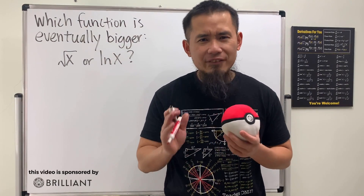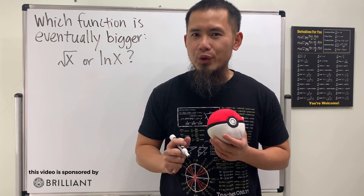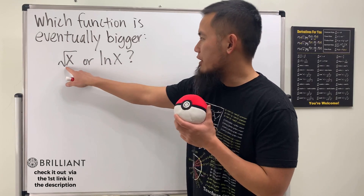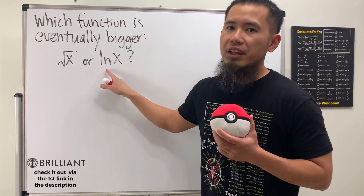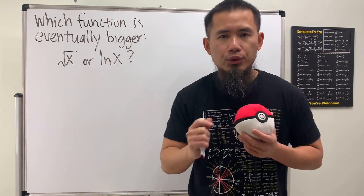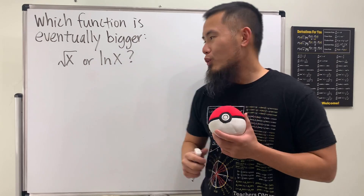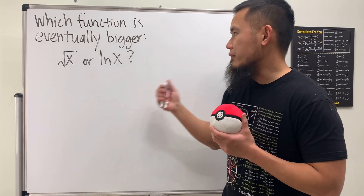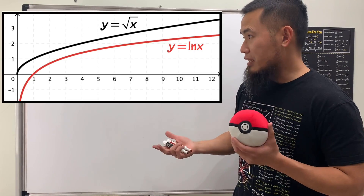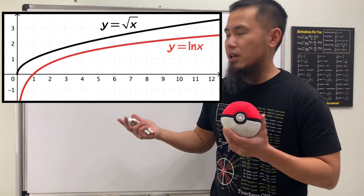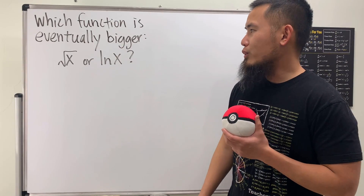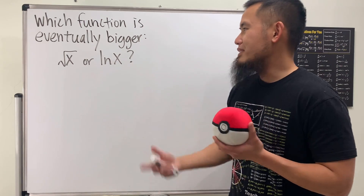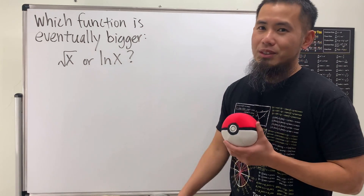Let's do some math fun. Here's a very interesting question: which function is essentially bigger — the square root of x versus the natural log of x? Well, one easy way to do this is to look at the graphs of these two functions, and it's clear that the square root of x is above the natural log of x. So the clear winner is the square root of x — but this is too boring because it was too easy.